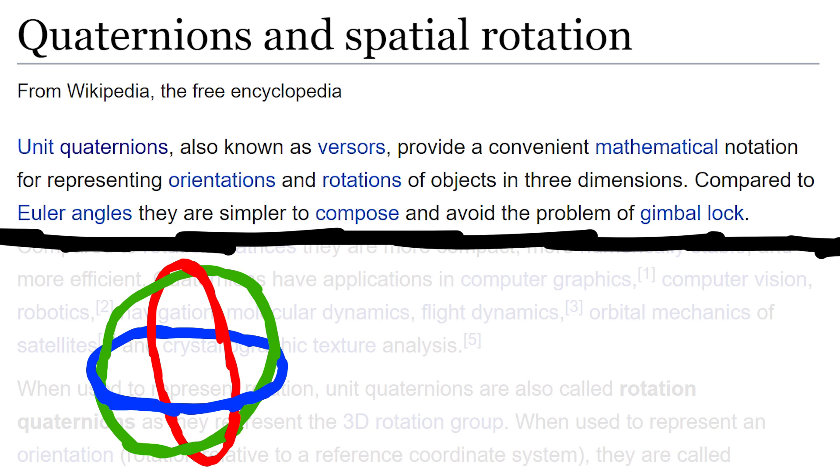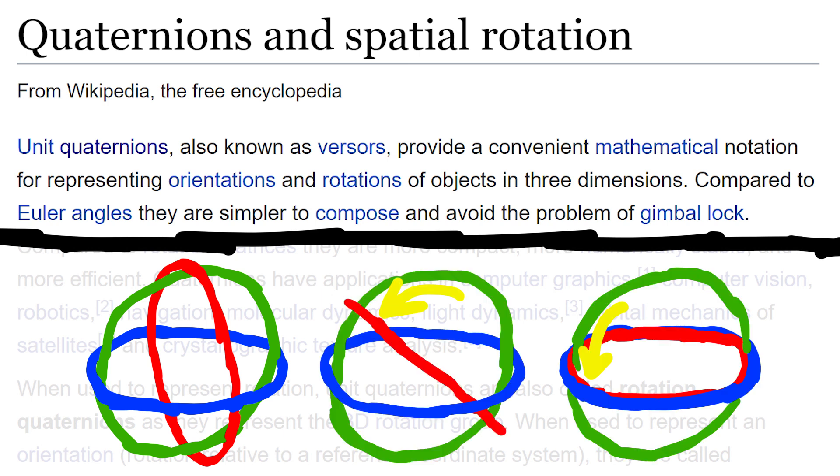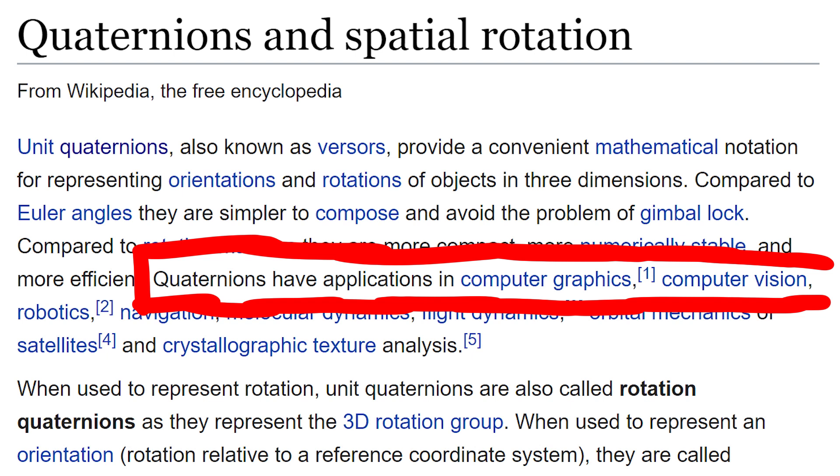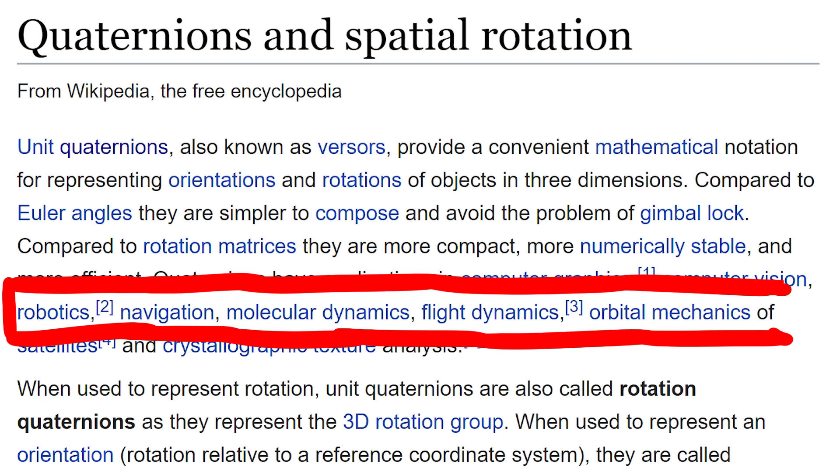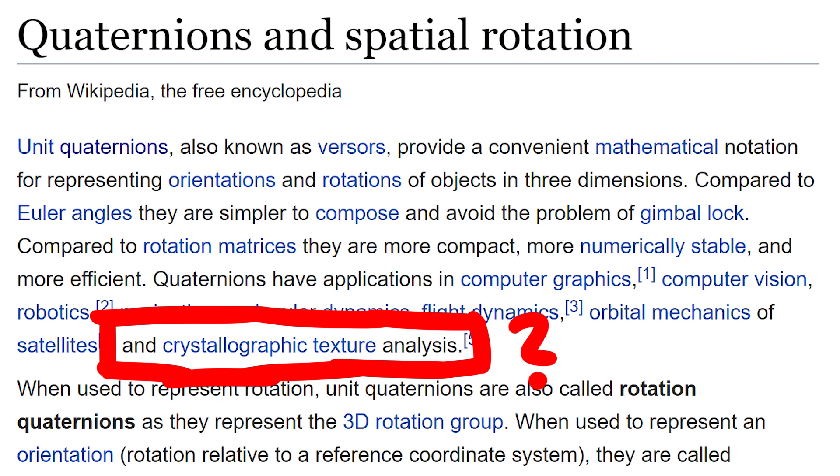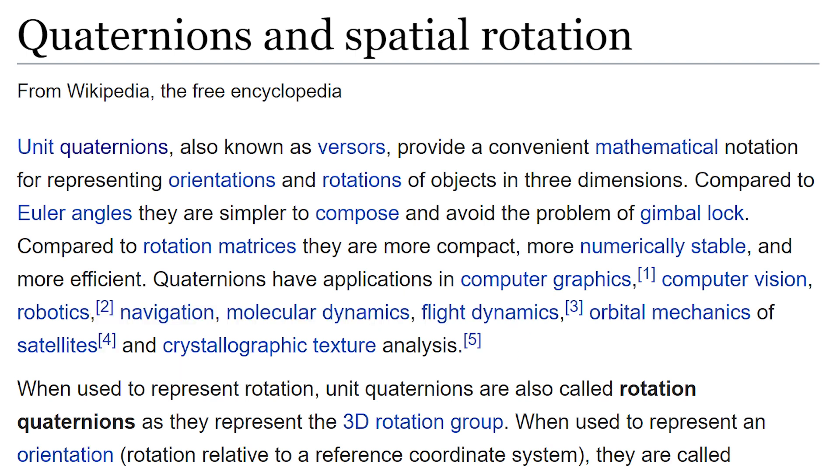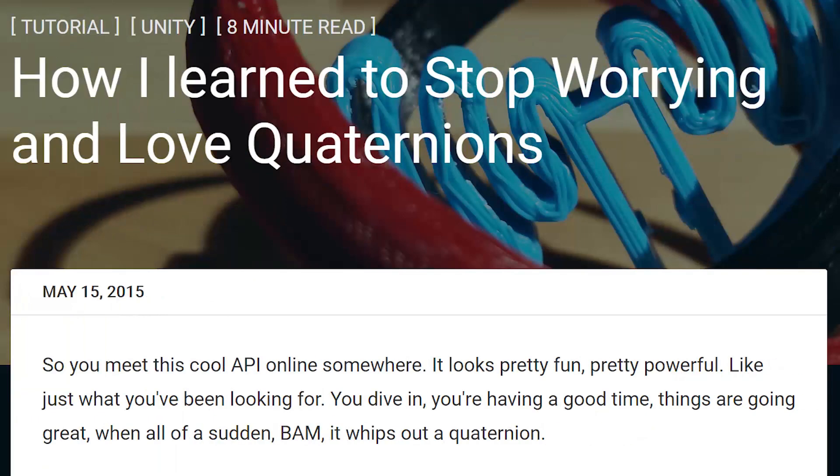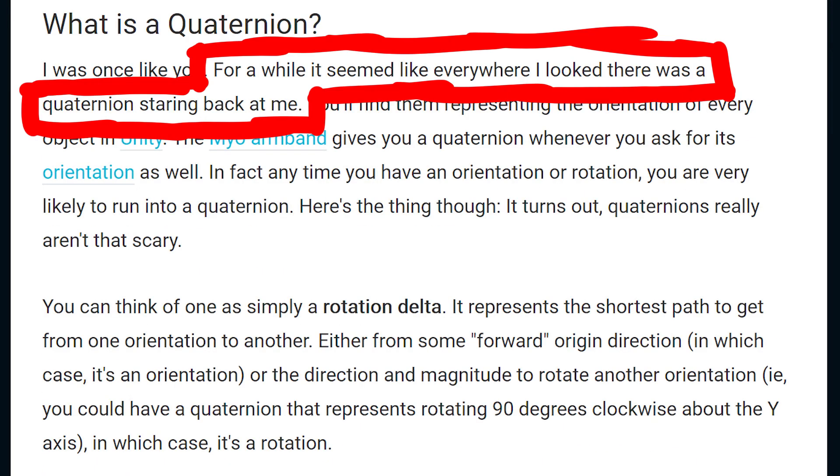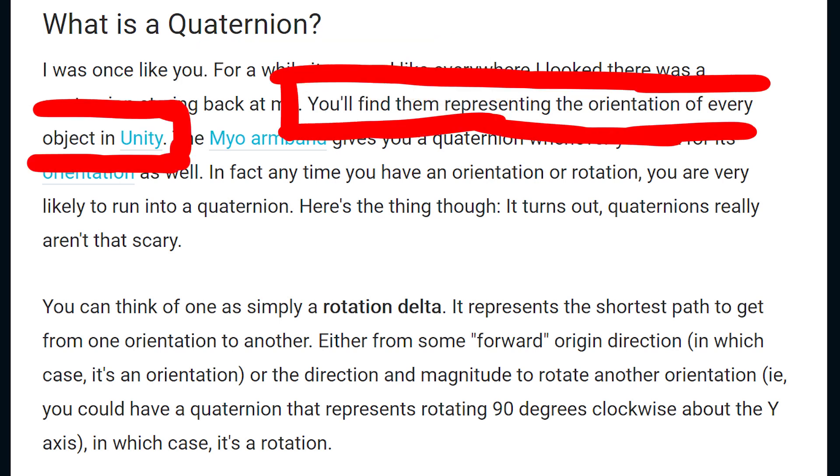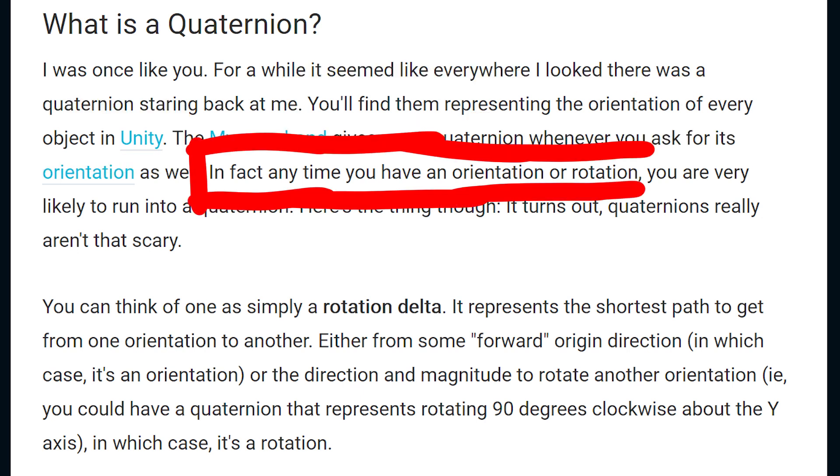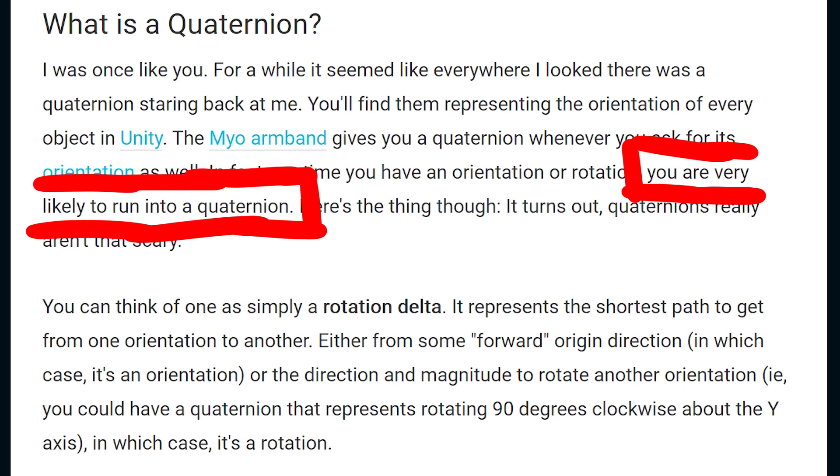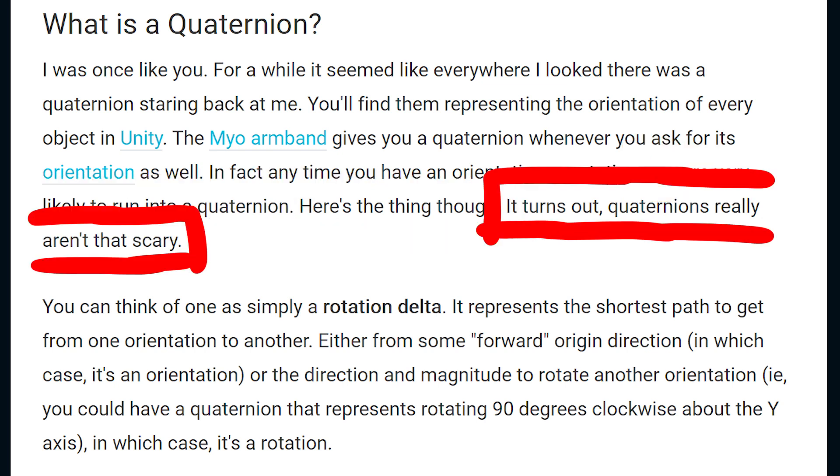Gimbal lock occurs when you rotate axes such that suddenly two axes line up exactly. And because now two axes are the same, you lost a full axis degree of movement. Quaternions have applications in computer graphics, computer vision, robotics navigation, molecular dynamics, flight dynamics, orbital mechanics of satellites and crystallographic texture analysis. You see, there are a lot of applications where they are useful. But it still doesn't make much sense, huh? If you were interested in any of these fields before, does it worry you now? Feels a bit scary. But let me quote an article called how I learned to stop worrying and love quaternions. For a while it seemed like everywhere I looked there was a quaternion staring back at me. You will find them representing the orientation of every object in unity. In fact any time you have an orientation or rotation, you are very likely to run into a quaternion. Here's the thing though, it turns out quaternions really aren't that scary.